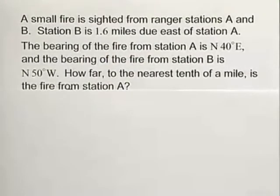The bearing of the fire from station A is north 40 degrees east and the bearing of the fire from station B is north 50 degrees west. How far to the nearest tenth of a mile is the fire from station A?